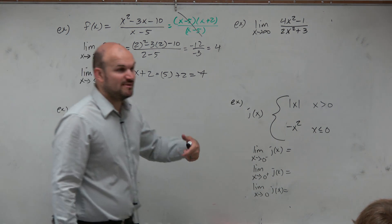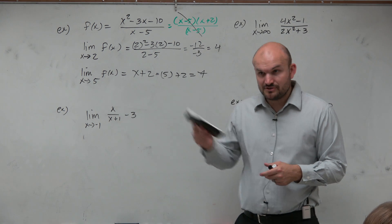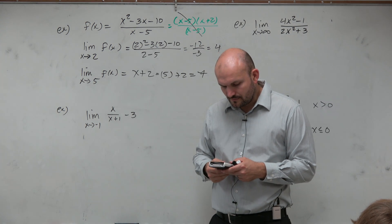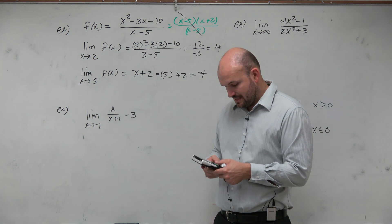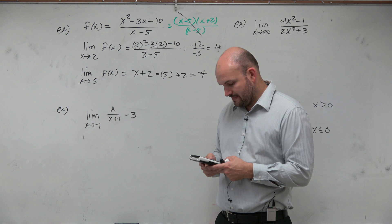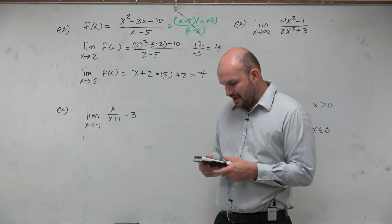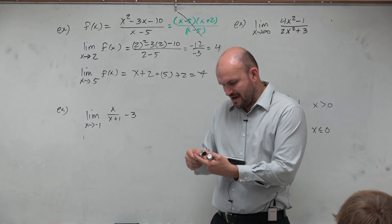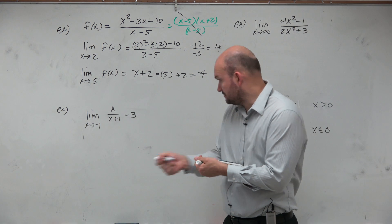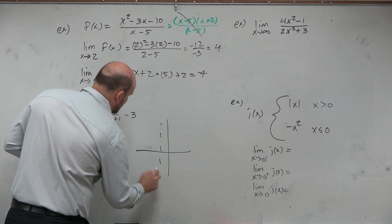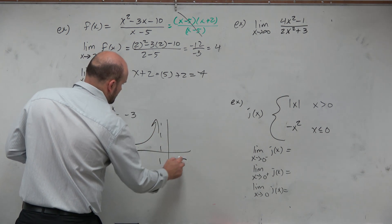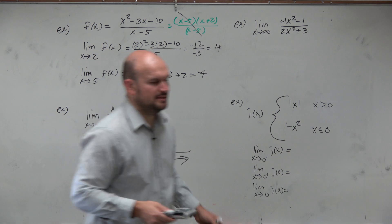The one thing I do know by inspection, I do know that there's a vertical asymptote at x equals negative 1. Would everybody agree with me? Because I know that's where my function is undefined. So what I would do is take my calculator, and I'm just going to graph this. So I do x divided by parentheses x plus 1, and then minus 3. When I go ahead and graph it, I get a graph that looks something like this.